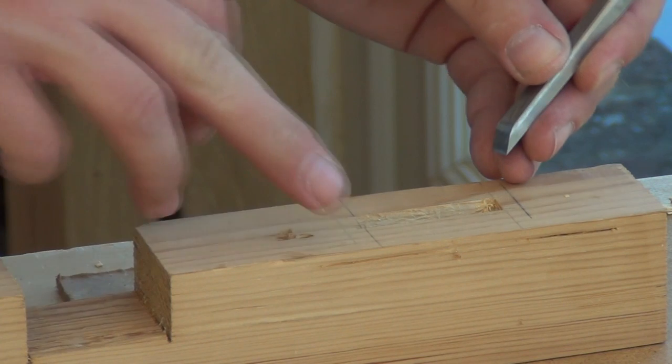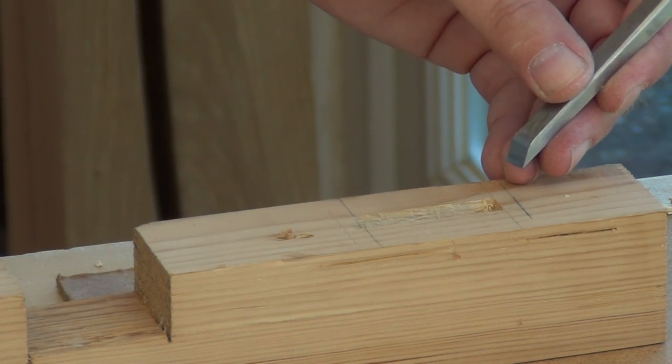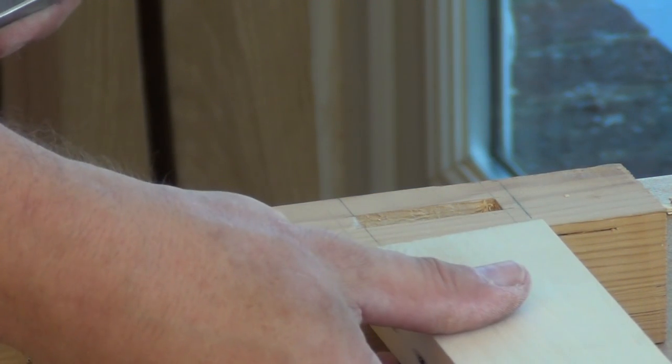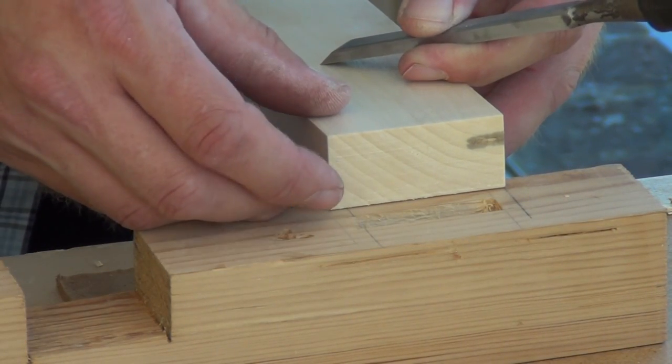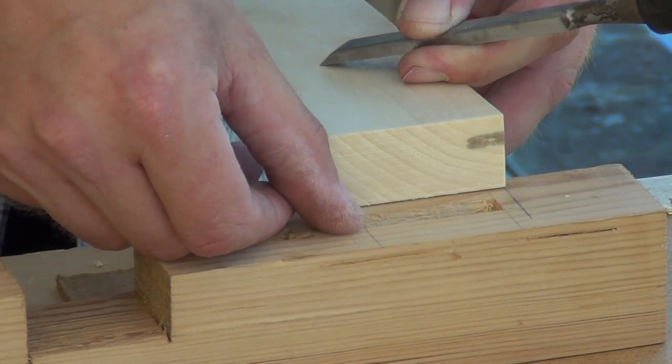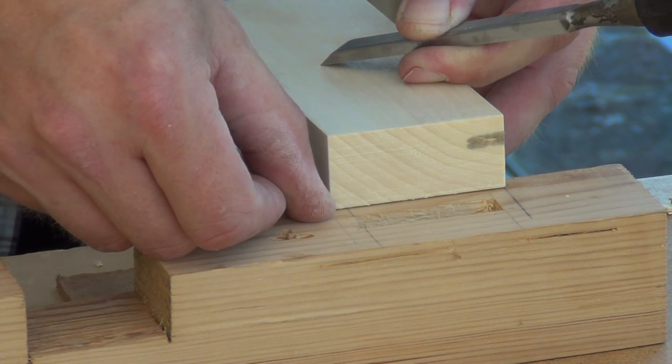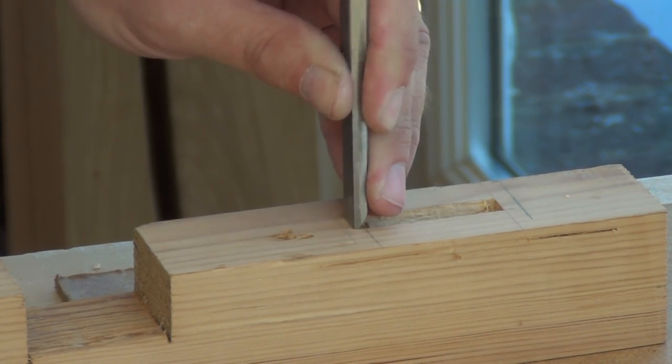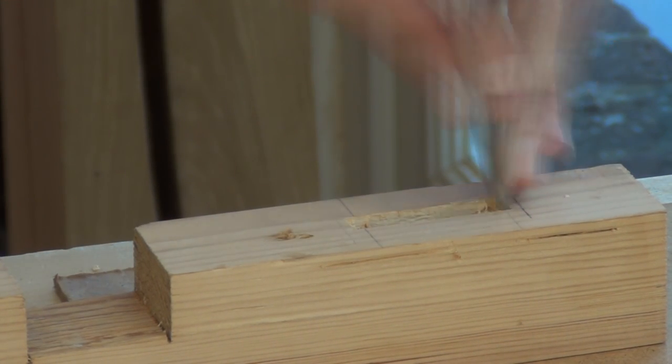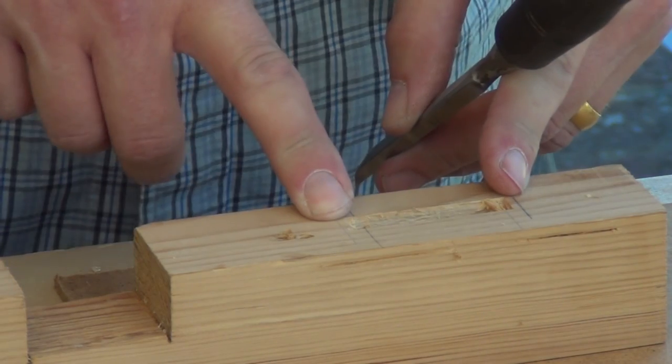And I like to go not quite as wide as the whole component. So we mark those lines around for the full component. And I'm going to split the difference between where the mortise is and where the full width of the component is.